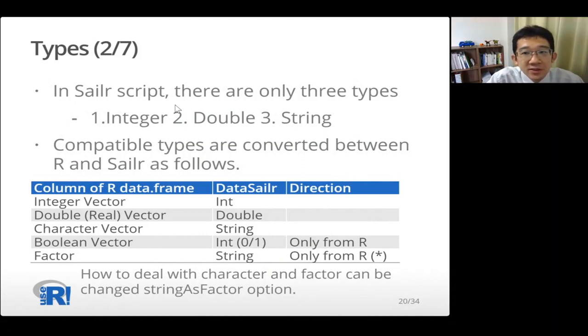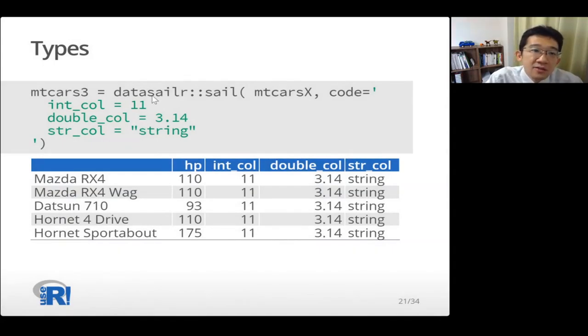Next, Sailr types. In Sailr script, there are only three types: integer, double, and string. And compatible types are converted between R and Sailr as follows. If the column of data frame is integer vector, it's treated as int from Sailr. And if the column of the vector is double on data frame, it's treated as double from Sailr. And if the column vector of data frame is character vector, it's treated as string. So you can use integer, double, and string in Sailr script. You can see this result.